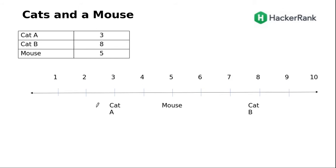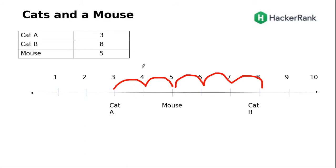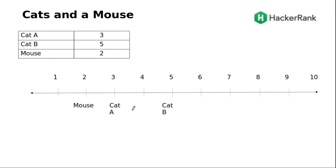Let's look at another example. Cat A takes two units of time to reach the mouse, and Cat B takes three units of time to reach it. So Cat A moves faster toward the mouse because it takes only two units of time compared to Cat B's three, making Cat A the winner. In yet another case, both cats move in the backward direction because the mouse is at the first position. Cat A takes one unit of time to reach it, but Cat B takes three units of time, so Cat A is again the winner. I hope the problem is understood.